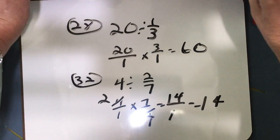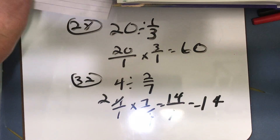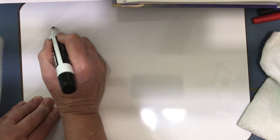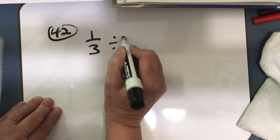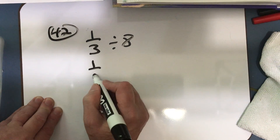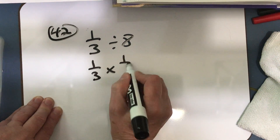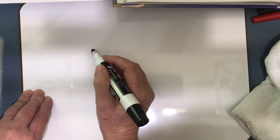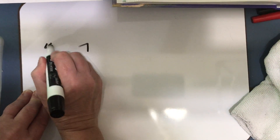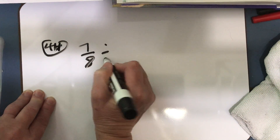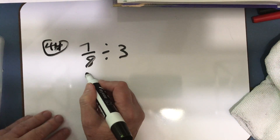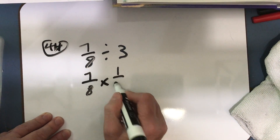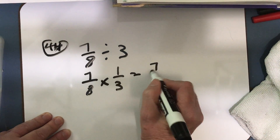Number 42 is 1/3 divided by 8 — a unit fraction divided by a whole number. 1/3 divided by 8 would be 1/3 times the reciprocal of the divisor, 1/8, which equals 1/24. And then number 44 is 7/8 divided by 3, a fraction divided by a whole number. So that would be 7/8 times the reciprocal of the divisor, 1/3. I multiply and get 7/24.